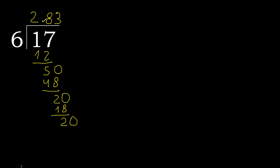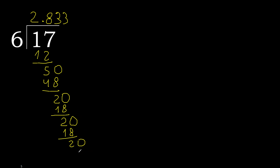0 point. 6 multiplied by 3 is 18. Subtract — the remainder repeats. Here it repeats, therefore the digit 3 repeats. Finish it.